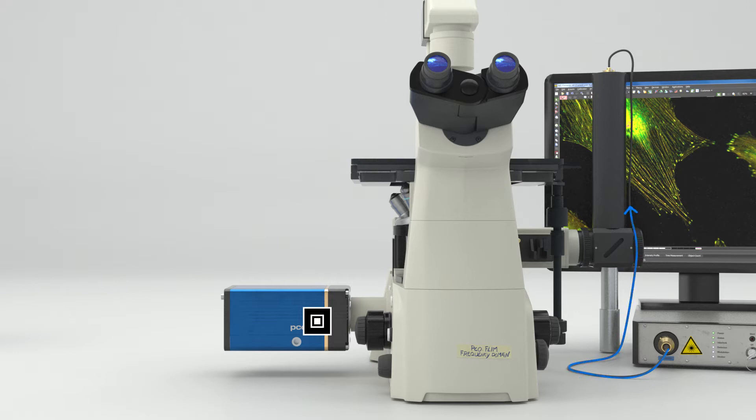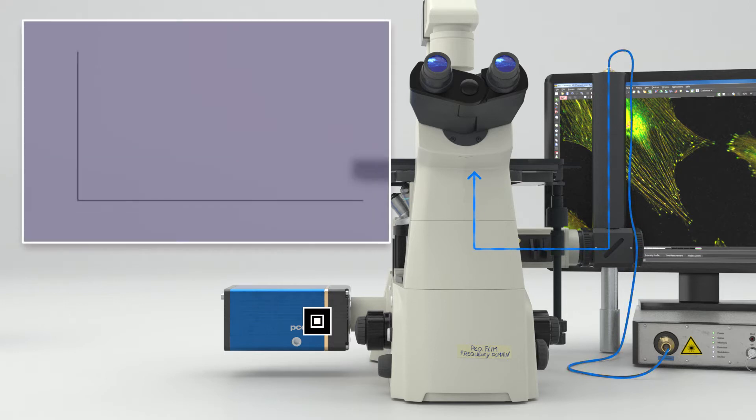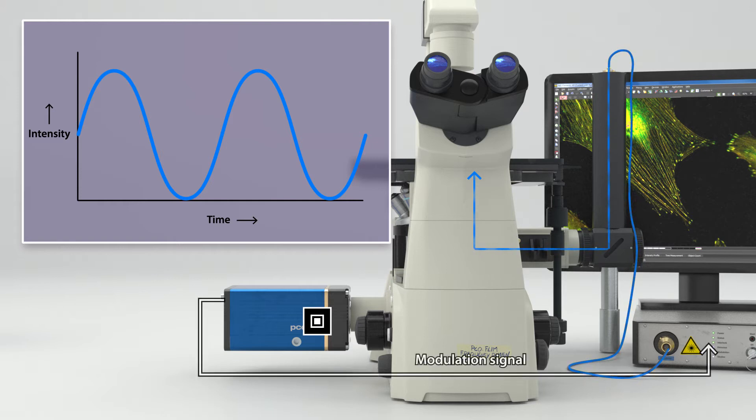In this frequency domain approach, the intensity of the excitation light is continuously modulated using sine or square waves. The modulation source is the camera, which provides modulation frequencies ranging from 5 kHz up to 40 MHz as well as the signal for dark gating.